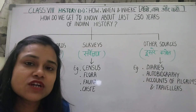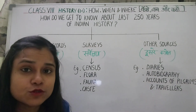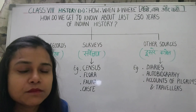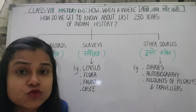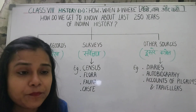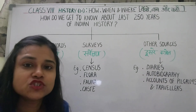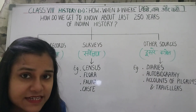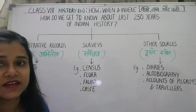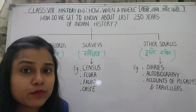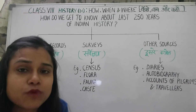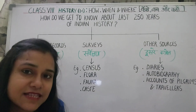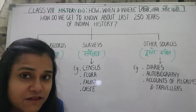The British government also thought that a lot of information should be collected through data or surveys. So they sent people everywhere to collect information. They did surveys, like the census survey — counting the population to know a lot about the people. In India, this happens every 10 years, after every decade.